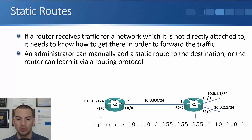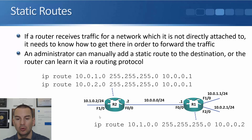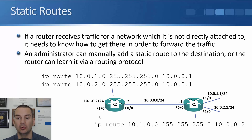It should be obvious how to do the routes on R2 now. It's going to need two routes: a route to 10.0.1 and a route to 10.0.2. The commands are IP route 10.0.1.0 255.255.255.0 with next hop 10.0.0.1 on R1, and IP route 10.0.2.0 255.255.255.0 with the same next hop 10.0.0.1 on router R1. Once you've done that, you'll be able to route traffic between all of the networks.